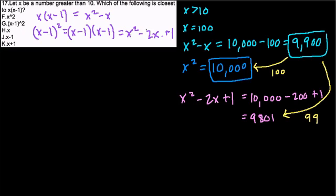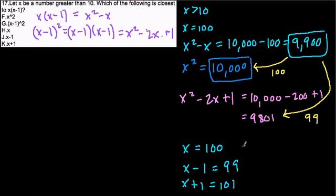What about choices H, J, and K? We can eliminate those because H equals x, which is just 100 — very far from 9,900. And x minus 1 equals 99, and x plus 1 equals 101. All of these are extremely far from our original value. That's because of the exponential growth — when x is large, x squared is much bigger than x, so squaring really impacts the value.